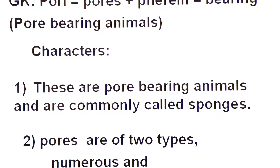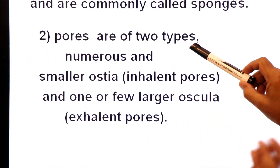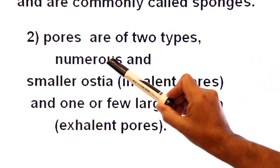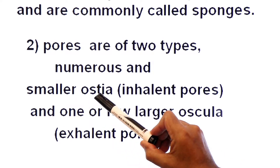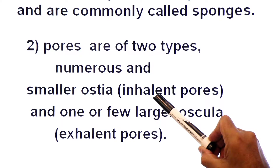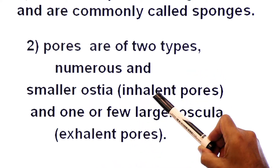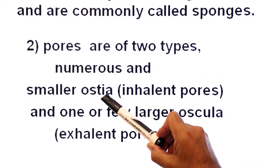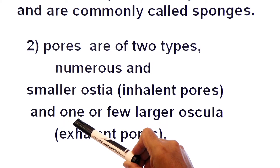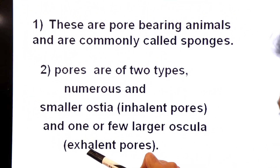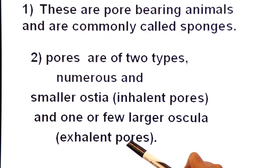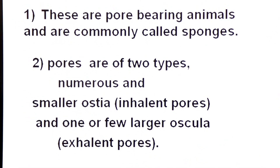Number two, pores are of two types. They have numerous smaller pores called ostia, known as inhalant pores — water enters the body of the sponge through these. And they have one or few larger pores called oscula, used to expel water as exhalant pores.